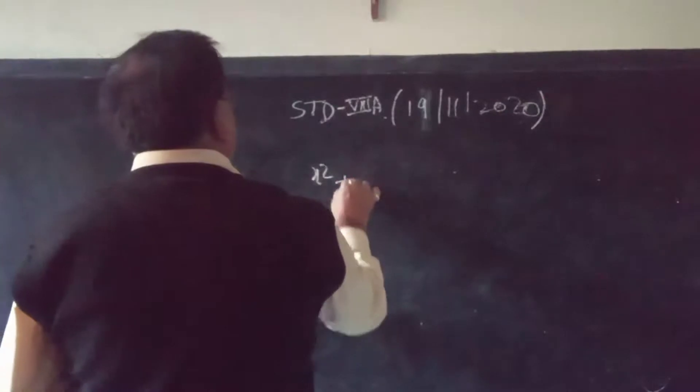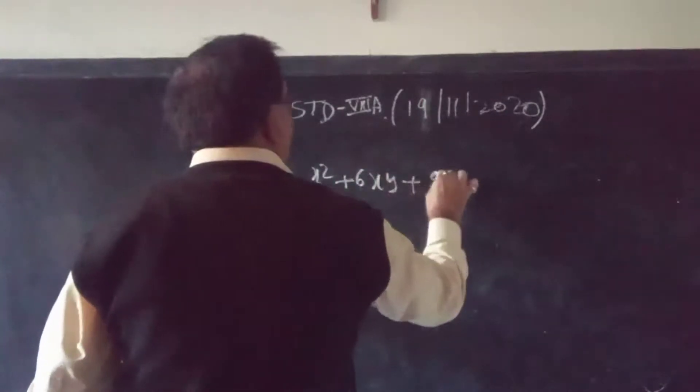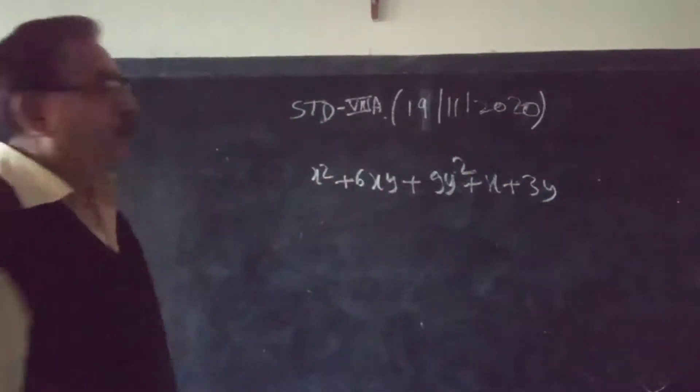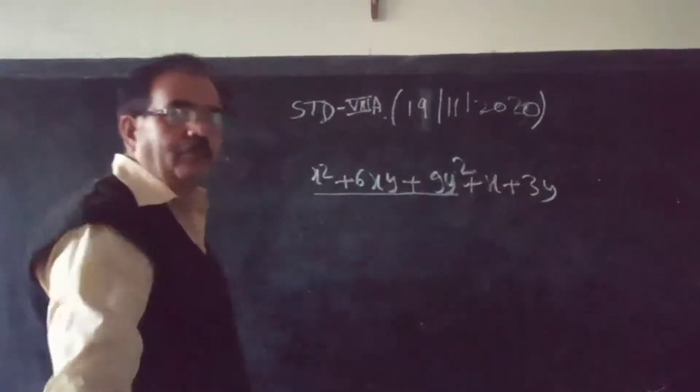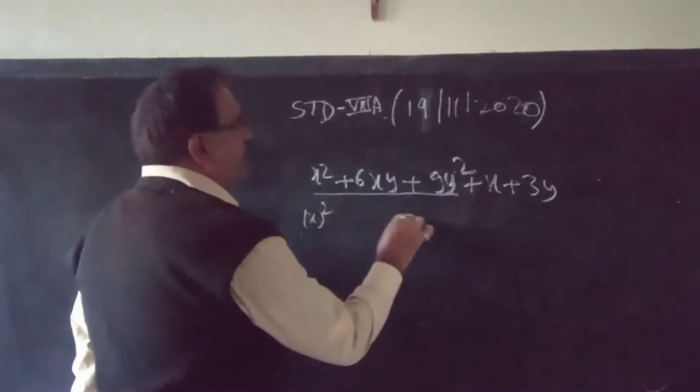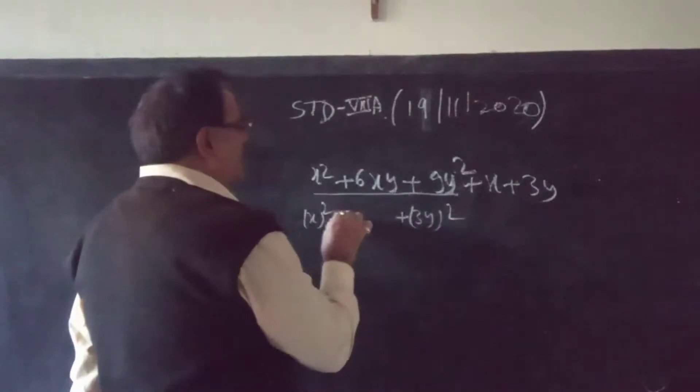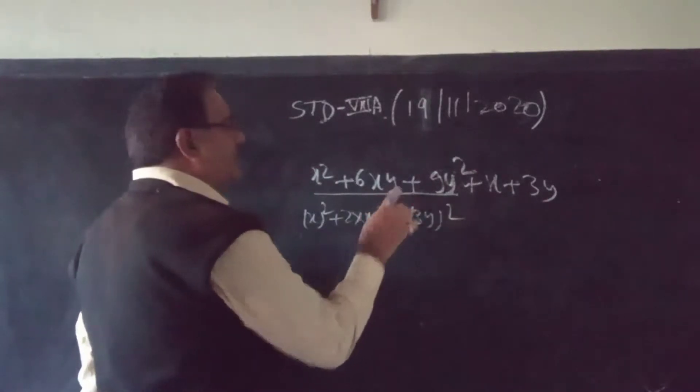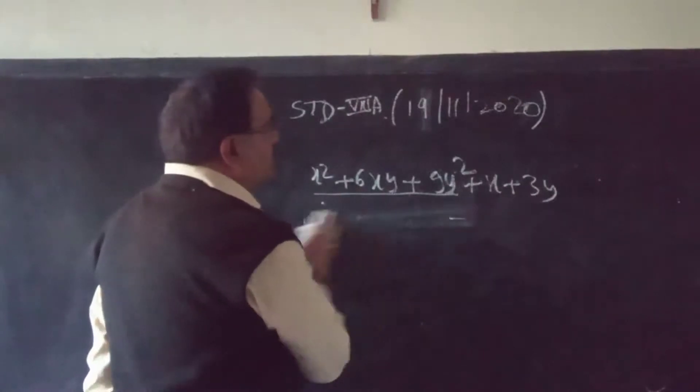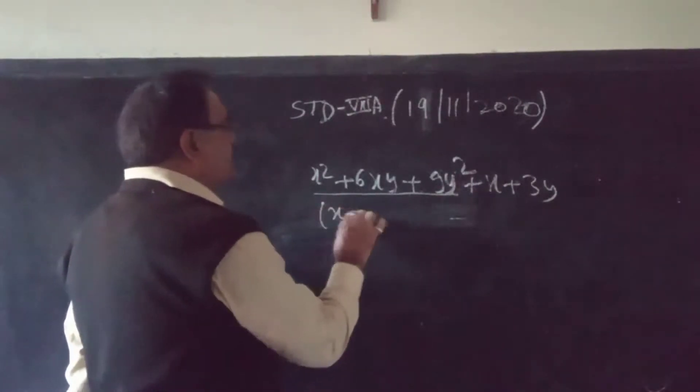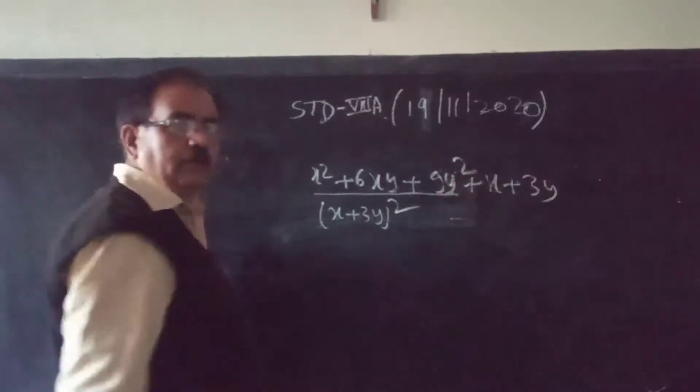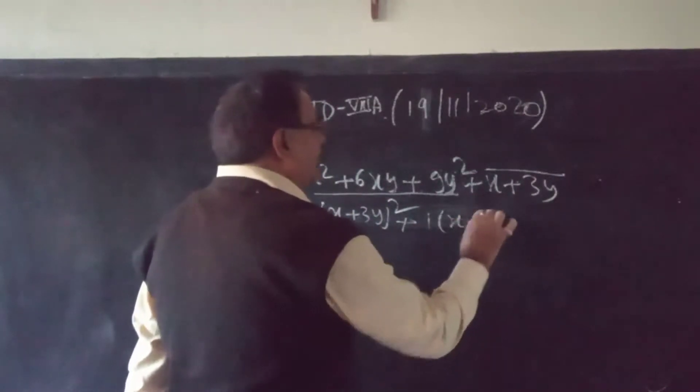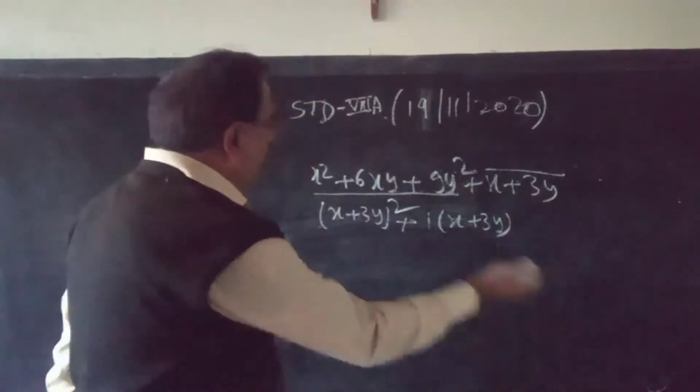Next: x squared plus 6xy plus 9y squared plus x plus 3. The first three terms are based on one formula. Here is x squared, here is 3y squared, then plus 2 times x times 3y is 6xy. So these three terms are a perfect square: x plus 3y squared. And the last part forms x plus 3y. On the whole, the form is x plus 3y times what is left, which is x plus 3y plus 1.